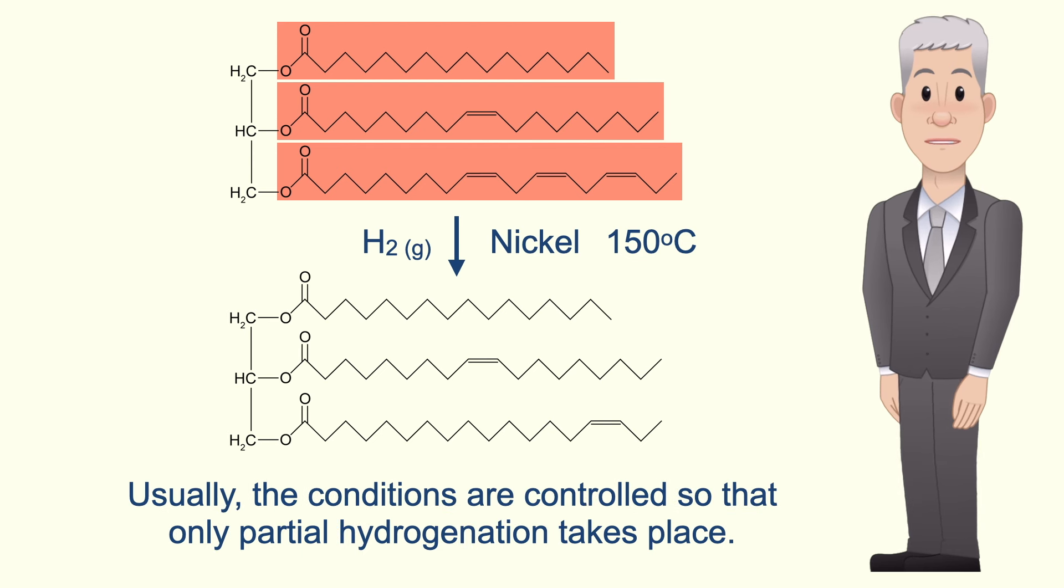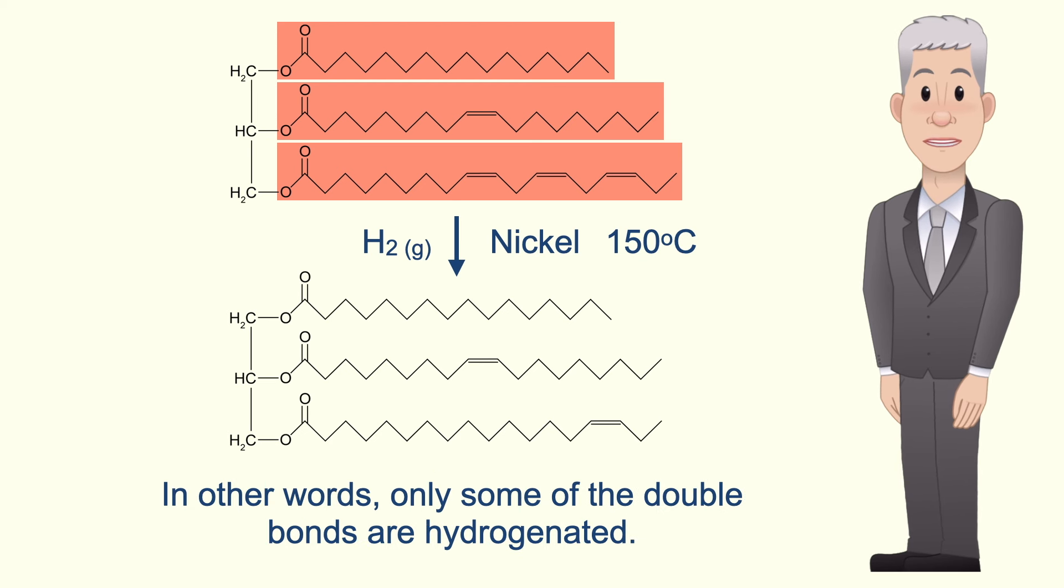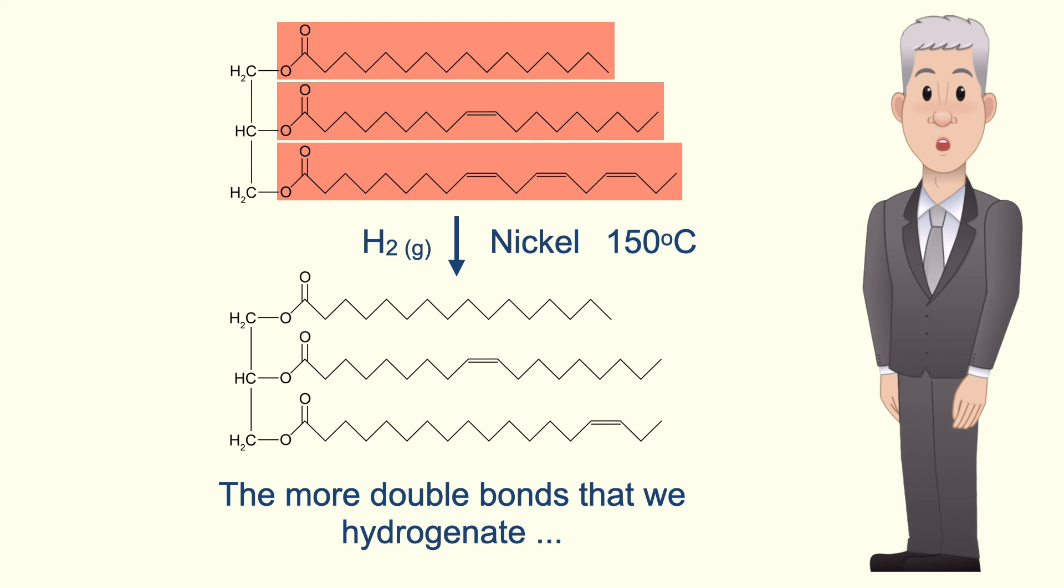Usually the conditions are controlled so that only partial hydrogenation takes place. In other words, only some of the double bonds are hydrogenated, and the more double bonds that we hydrogenate, the higher the melting point of the product.